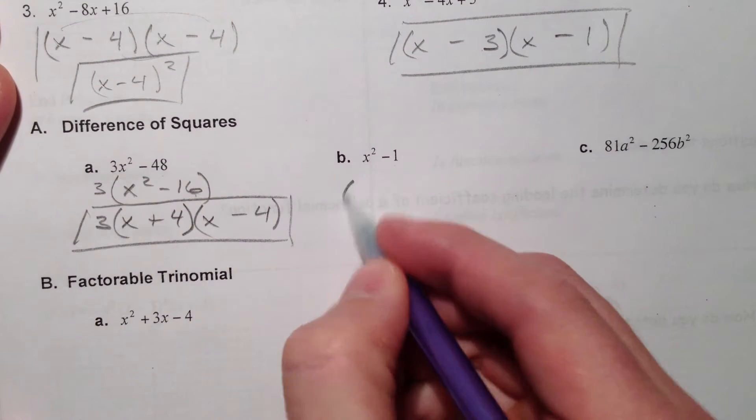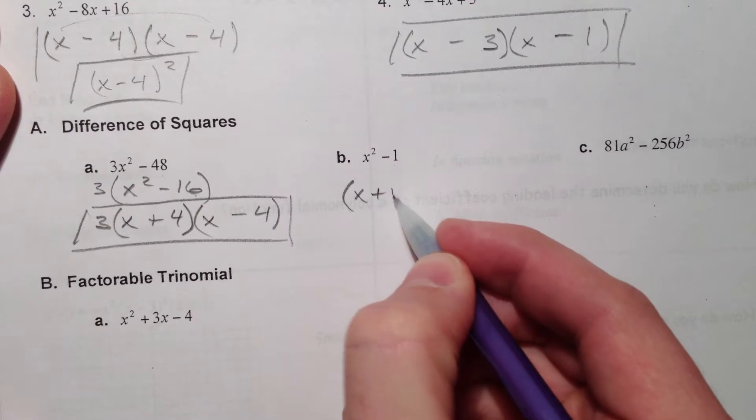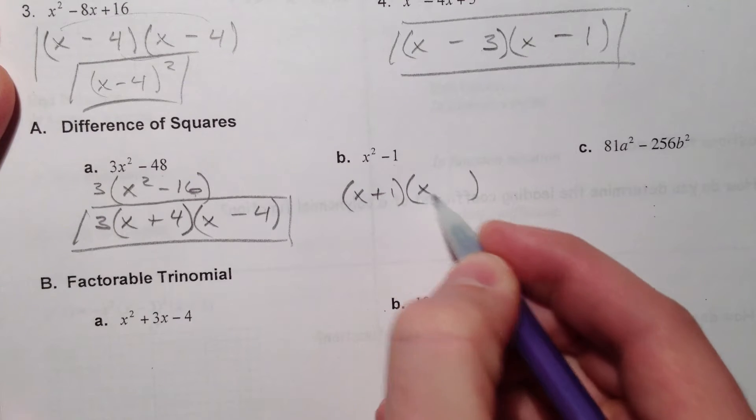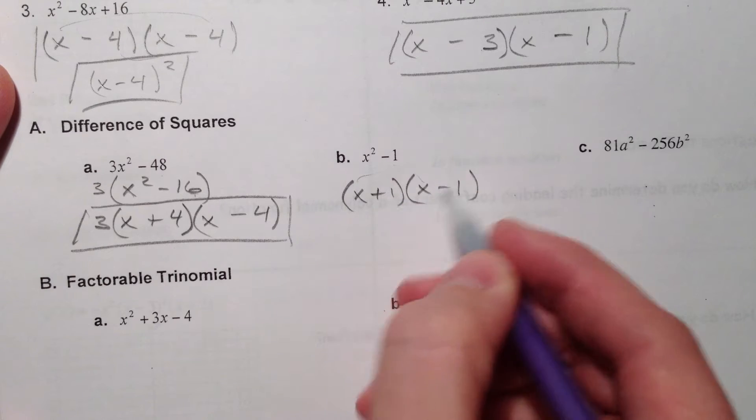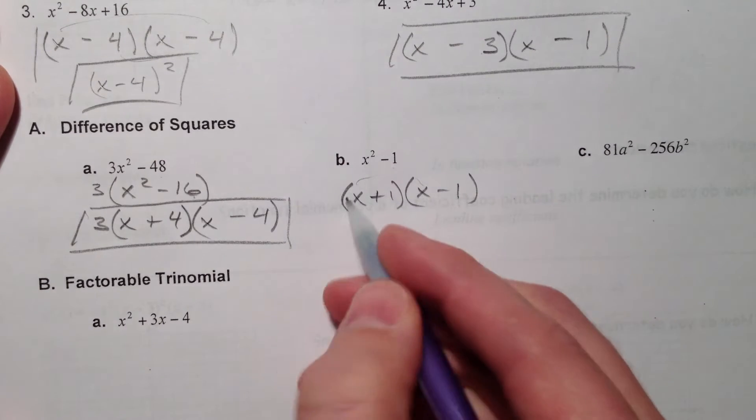Just x² - 1, as easy as, well, it's x + 1, x - 1. Because you get x², minus x, plus x cancels out, minus 1.